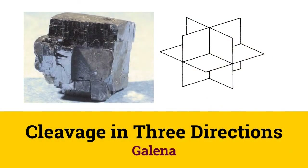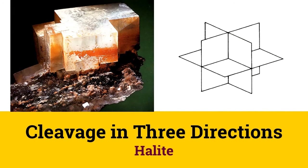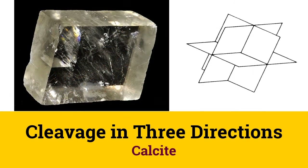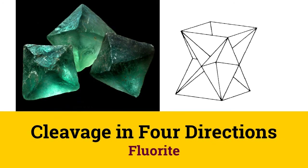Galena is a lead ore and has three cleavages at 90 degrees, and is thus said to have cleavage in three directions. Halite also has cleavage in three directions. The three planes of cleavage may be perpendicular to each other, as they are in halite, or they might not be so, as in calcite, which does not have cleavage at right angles.